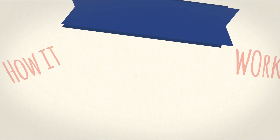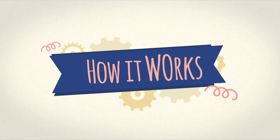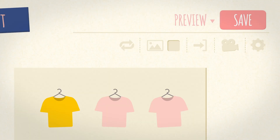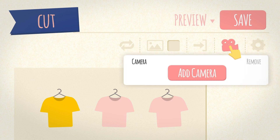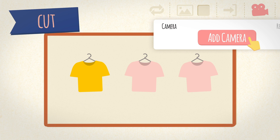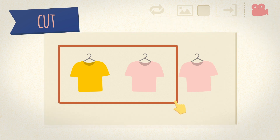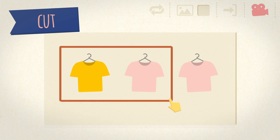Let's see how to apply camera movements in the Vyond Studio. When adding a cut shot, simply click on the camera icon at the top right corner. Add camera and frame the elements that you want to capture with the rectangle on the stage.